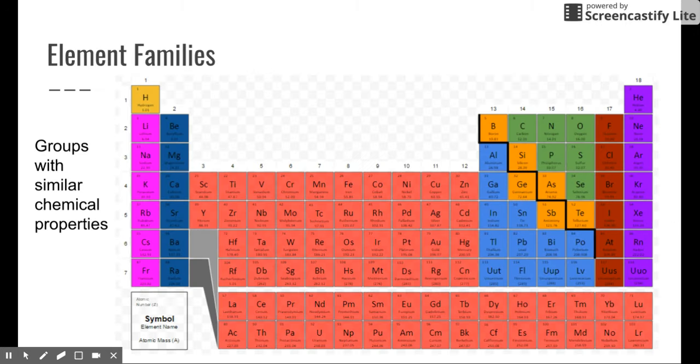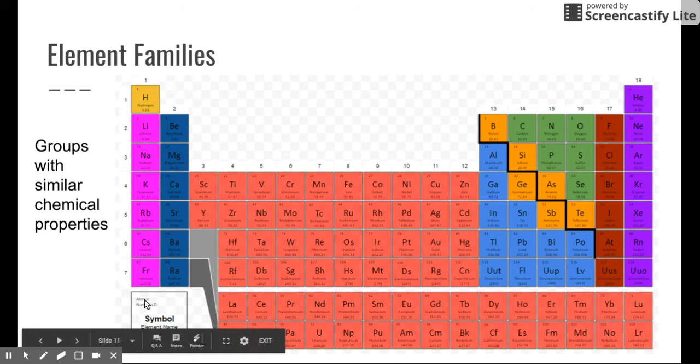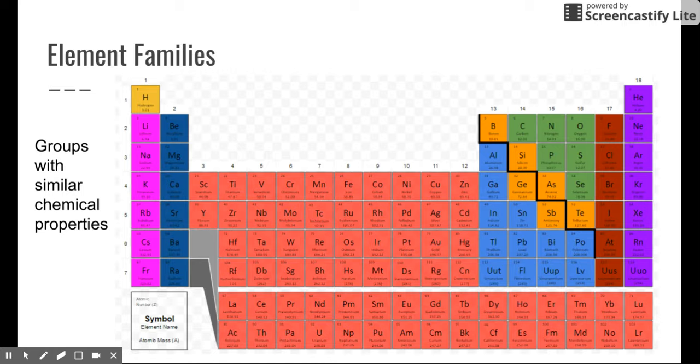Another definition I need you to know is element families, and if you look here on the periodic table, these colors represent the different families of the periodic table. There seems to be kind of unique and scattered, but if you look at it, they're very similar to groups. Like you can see here, this family, this pink family right here, is just a column or a group on the periodic table, maybe minus hydrogen. But here, these are called families because they're groups that have similar chemical properties to one another, and they're clumped together on the periodic table.